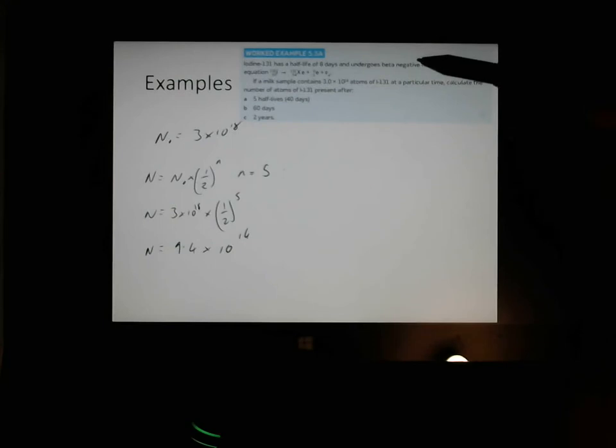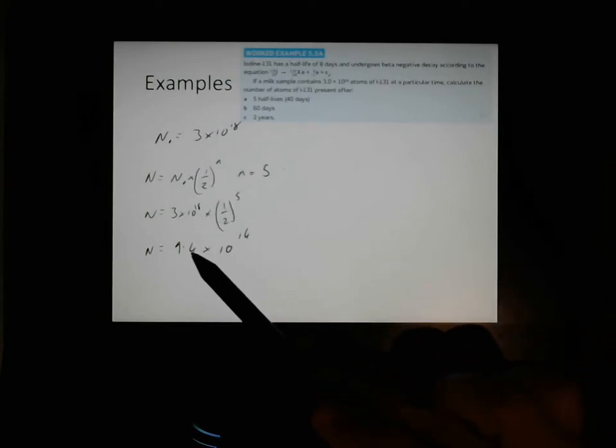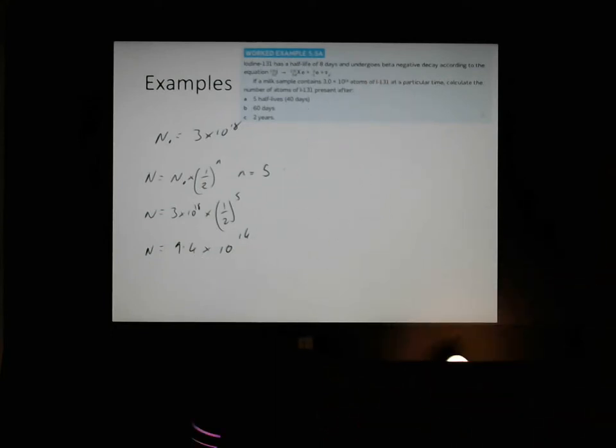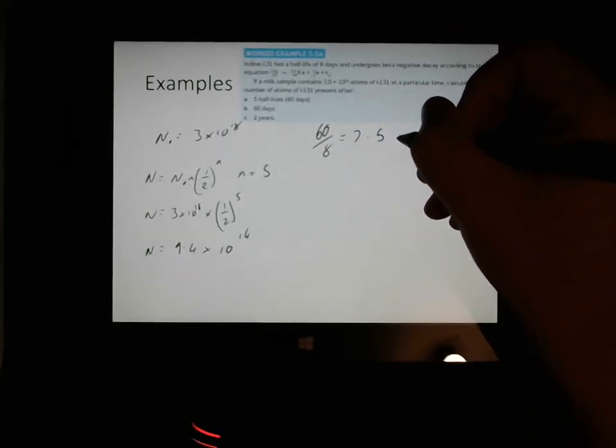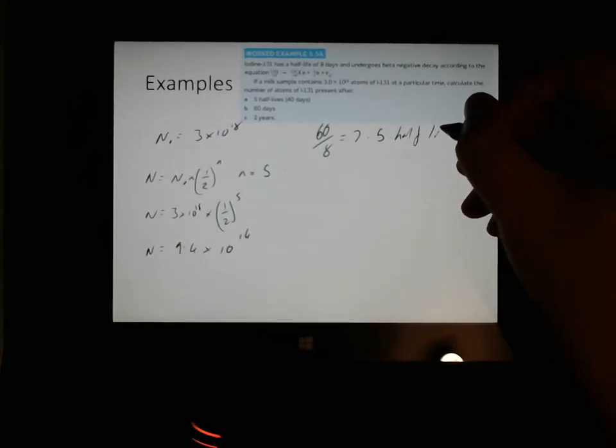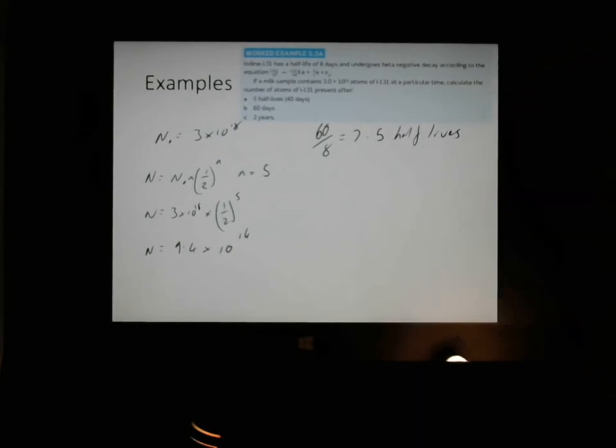Let's have a look at this next one, 60 days. So 60 days, we now actually need to know how many n's this is. I would say that this type of question is very much like what the final exam would have distributed by QCAA. In terms of the 60 day ones, well, we could work out how many half-lives 60 days is using the previous formula. But if you do 60 divided by 8, you get 7.5 half-lives.